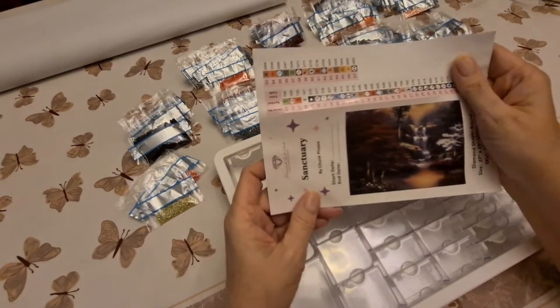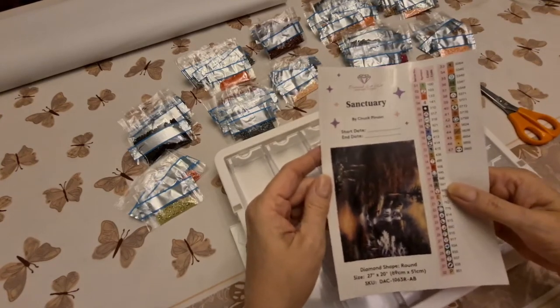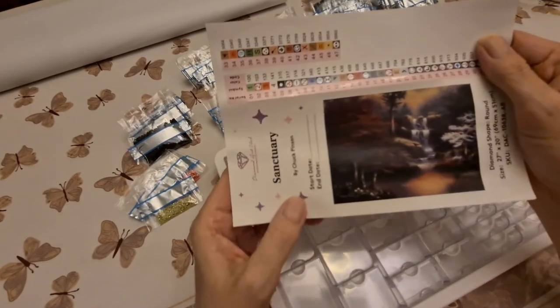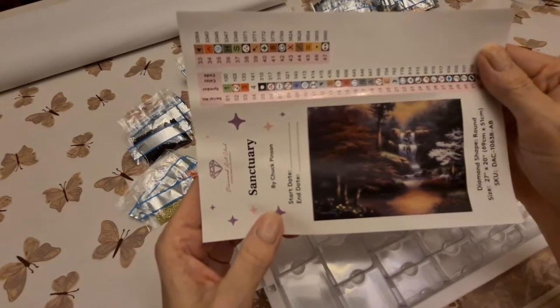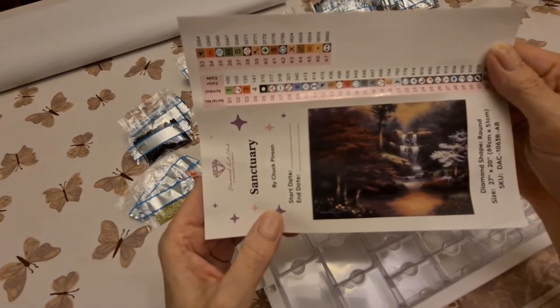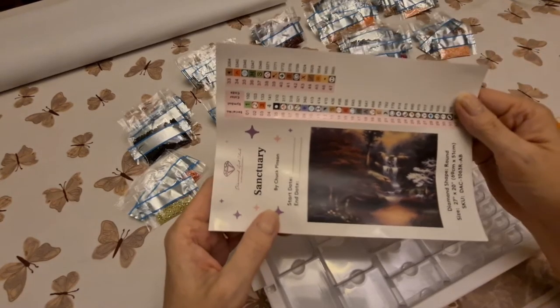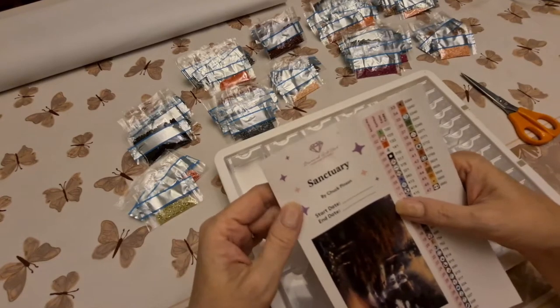I'll show you the picture again. It's called Sanctuary from Chuck Pinson. It's beautiful - a 69 by 51 with rounds, and it's got four ABs. I said I was going to kit up, so I'll show you the way I kit up.